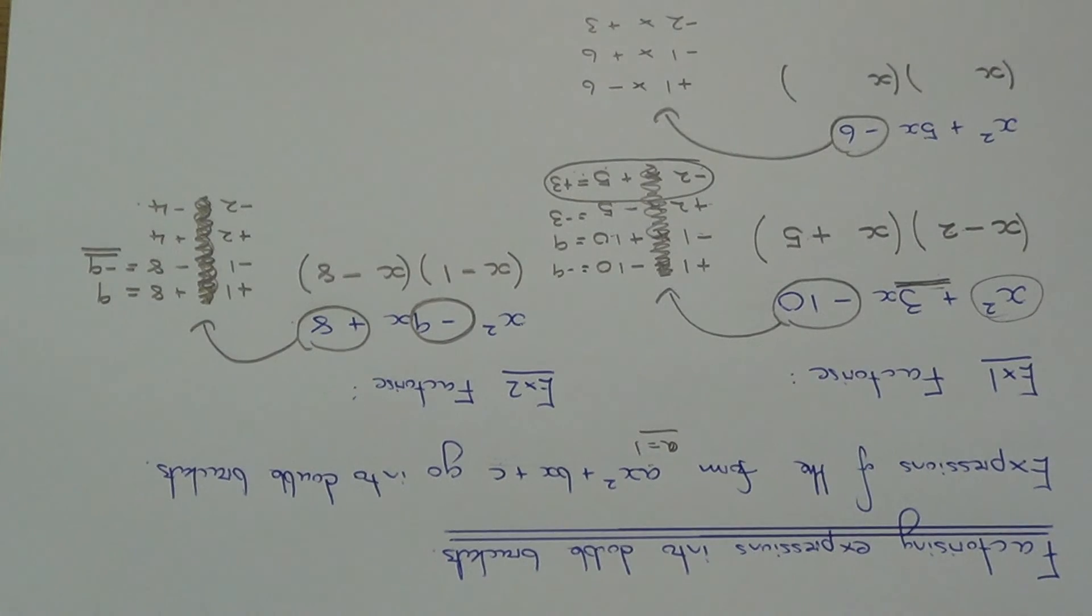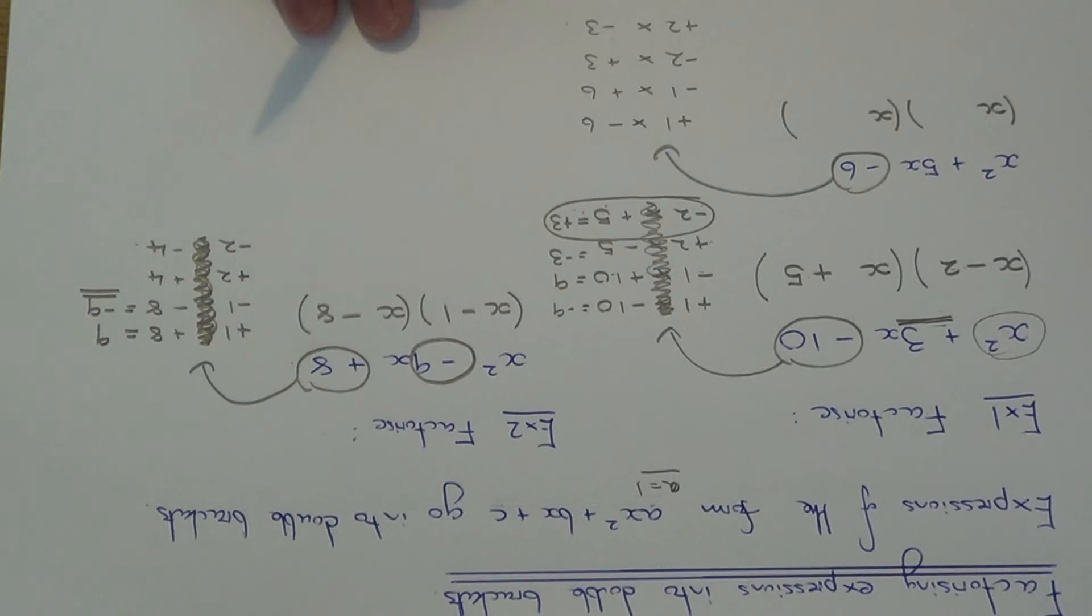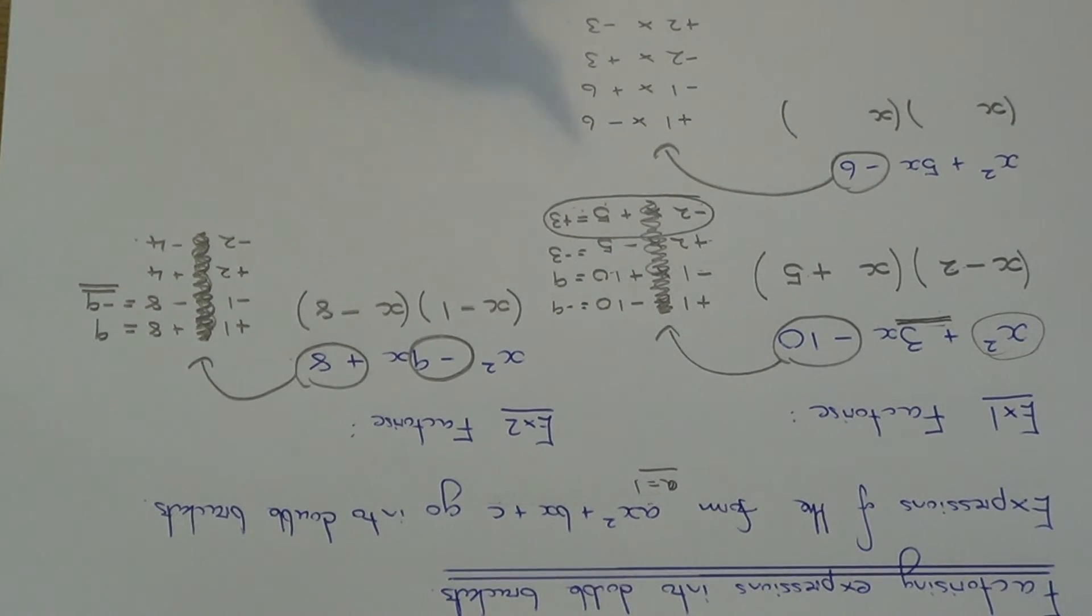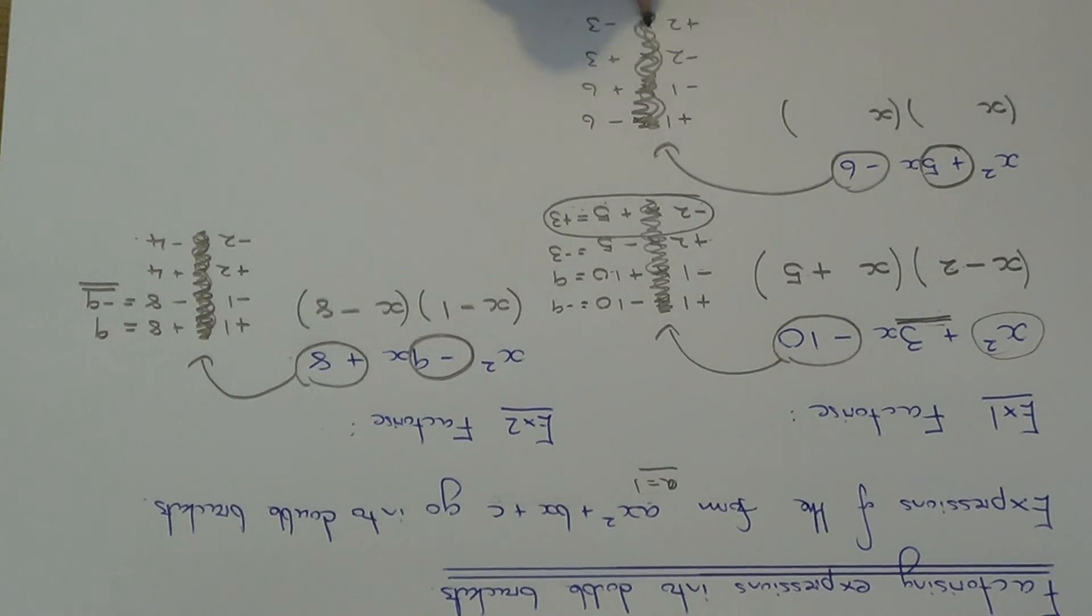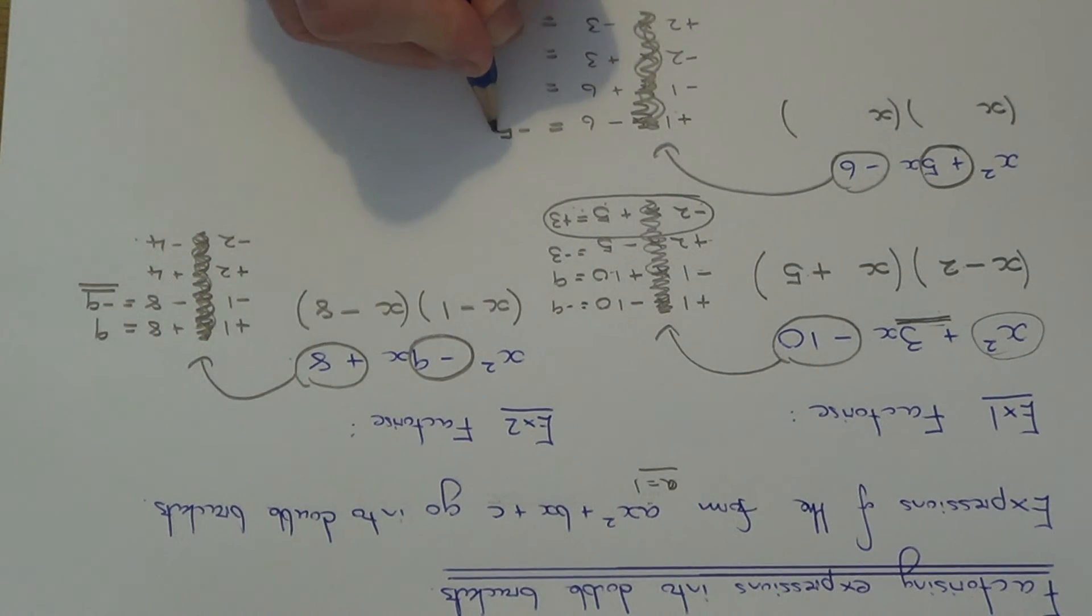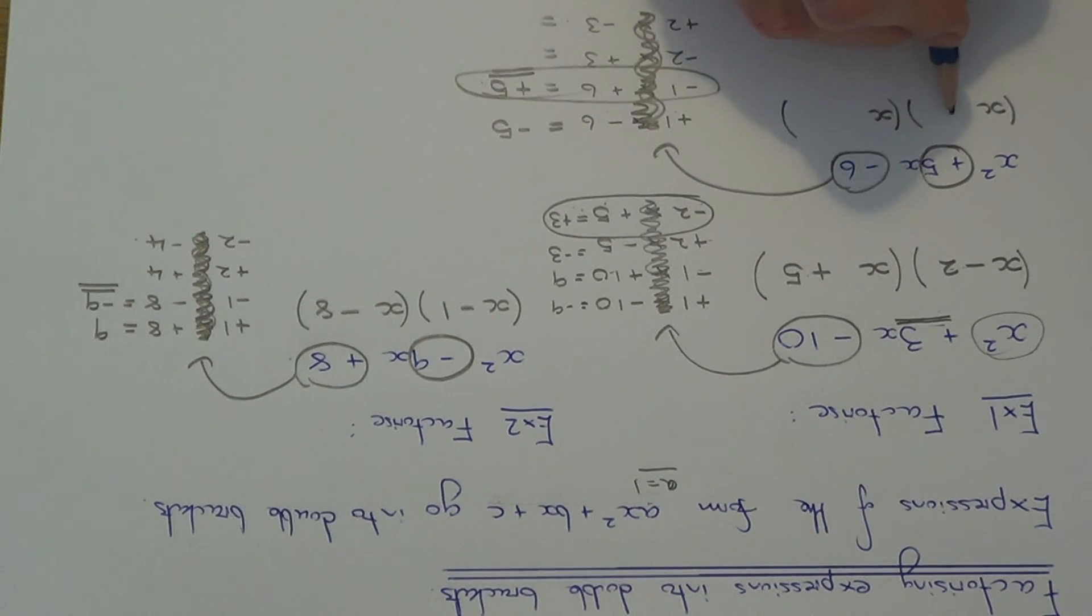So again, we've got four pairs of numbers which multiply to give us minus 6. So all we need to do next is work out which pair gives us the number before x, which is plus 5. So which ones add to give plus 5. So let's work these out. So plus 1, take away 6, is minus 5. Minus 1, add 6, is positive 5. So this is the pair that we need. So if you fill in minus 1 and plus 6.